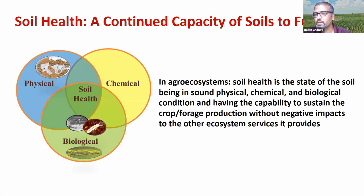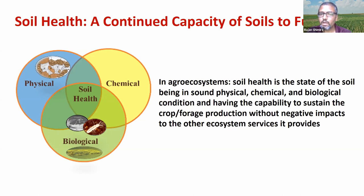Not only production is important — at the same time, maintaining water cycling and nutrient cycling matters. For example, carbon sequestration: soil is the biggest reservoir of carbon. Doing all these functions while producing crop is important. That is where we talk about soil health. Maintain soil physics, maintain chemistry and biology, and you get healthy soil.